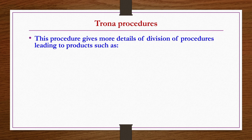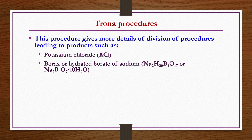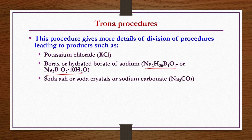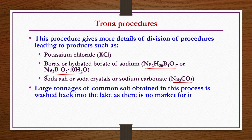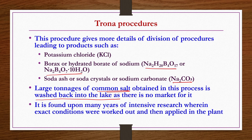The process gives products such as potassium chloride, borax (hydrated borate of sodium), soda ash or sodium carbonate (Na₂CO₃), and soda crystals. In this process, large tonnage of common salt is also produced, but since it does not have enough market, it is often washed back into the lake. This process was founded upon many years of intensive research in which exact conditions were worked out and applied in the plant.